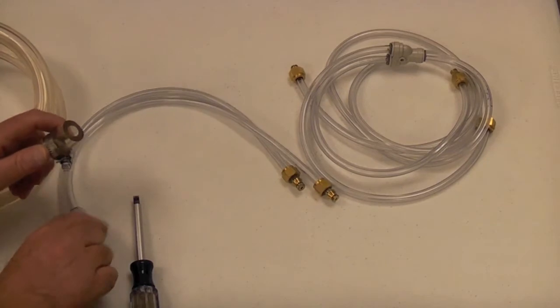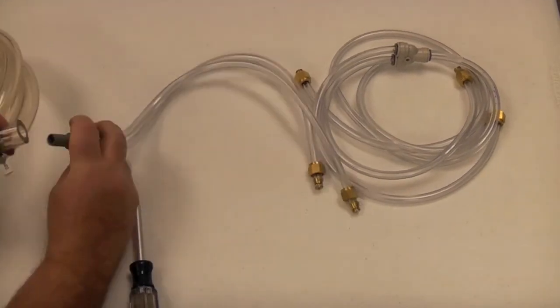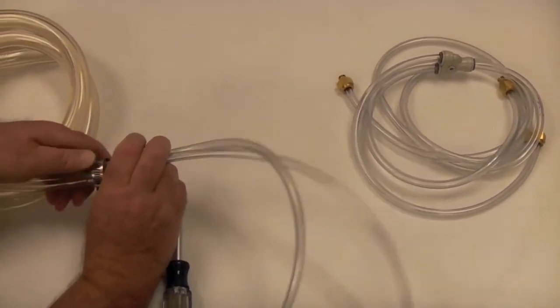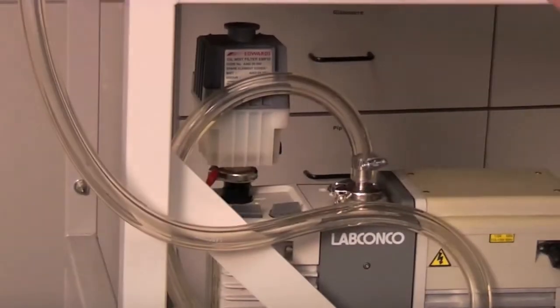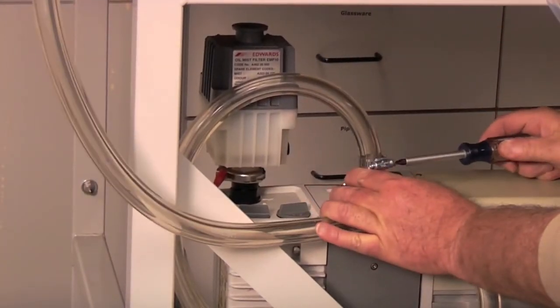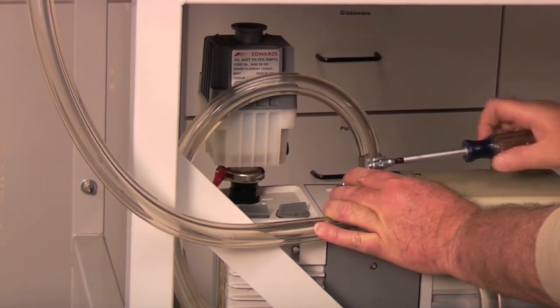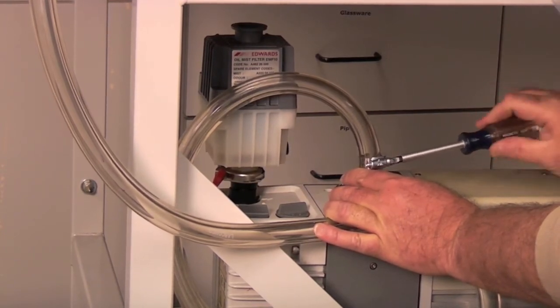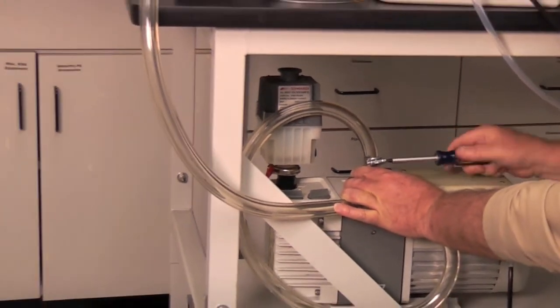To finish the vacuum outlet tube assembly, push the smooth side of the hose barbed adapter into the remaining open port of the two-way divider. Secure the opposite end of the half-inch tubing to the vacuum pump. Vacuum pump tube fittings can vary for various brands of vacuum pumps.